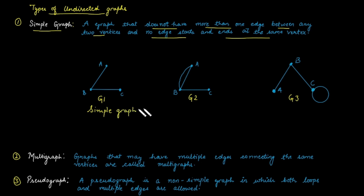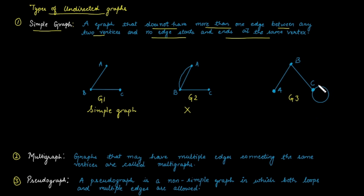What about graph G2? Is graph G2 a simple graph? The answer is no, because multiple edges are present between vertex A and B. So it means this is not a simple graph. What about graph G3? Again, this is not a simple graph because a self-loop is present at node C.